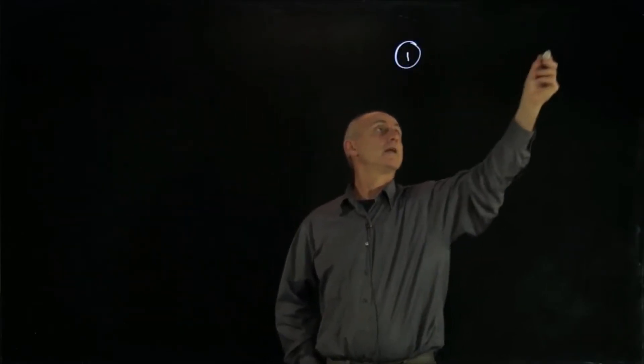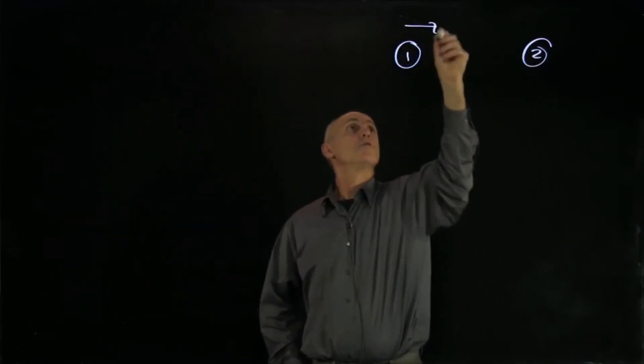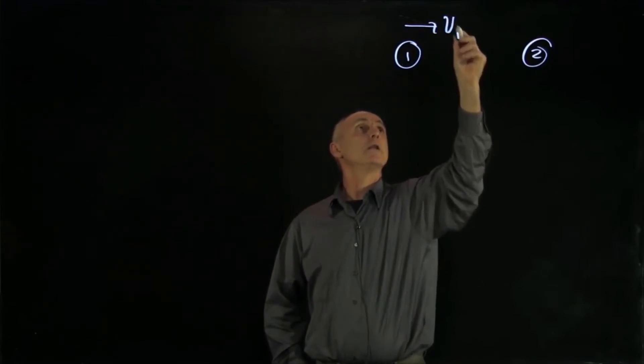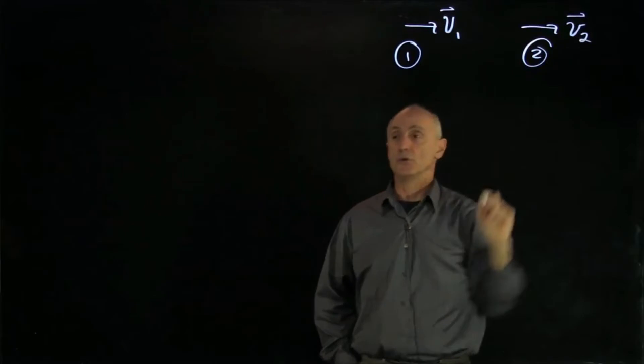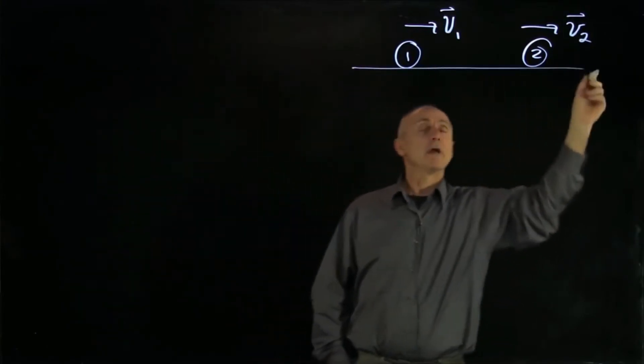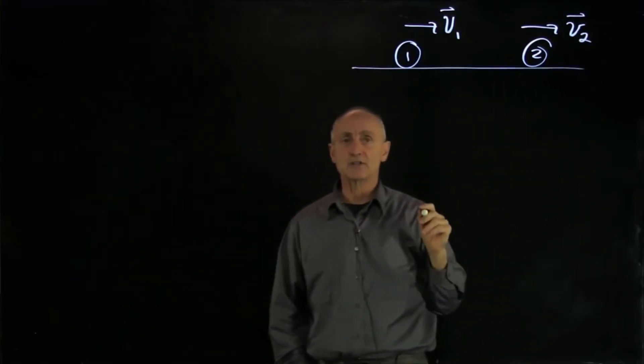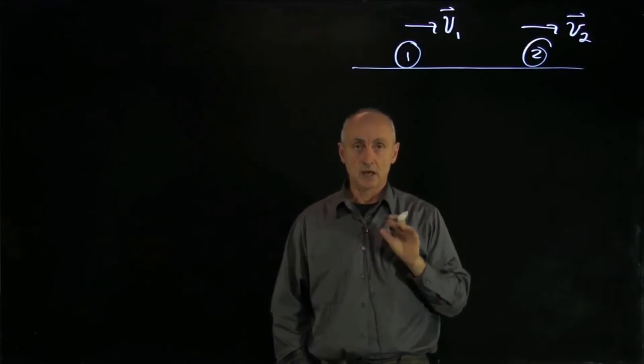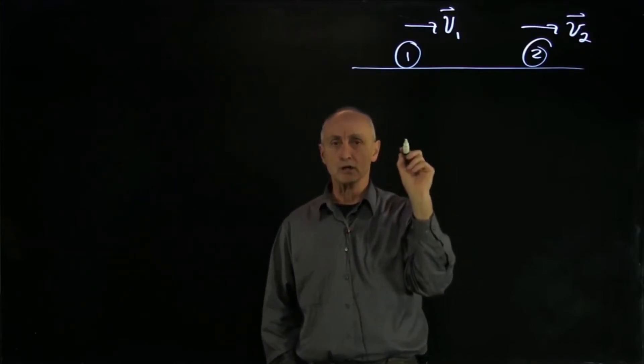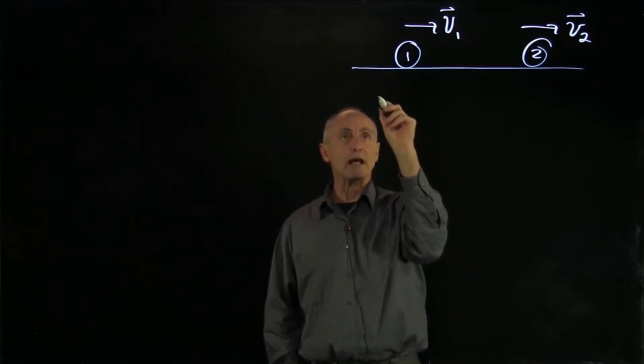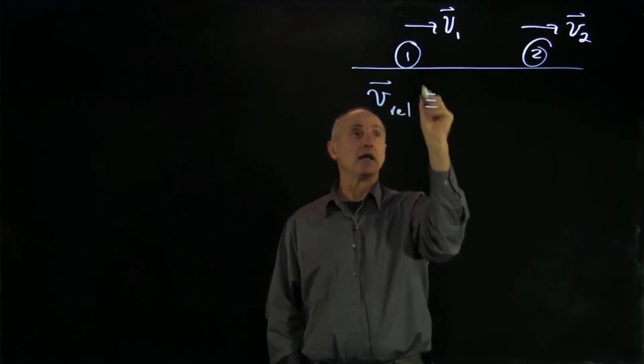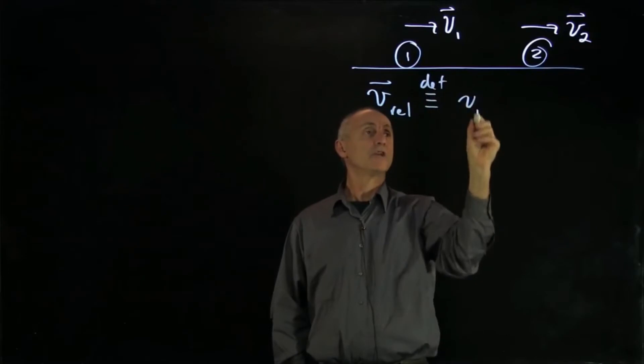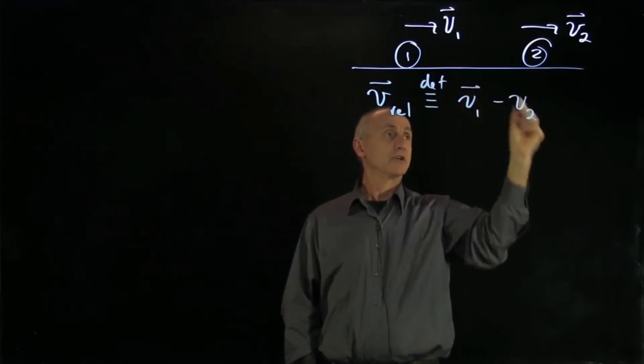For one-dimensional collisions, let's talk about two objects, object one and object two, moving with velocity v1 and velocity v2. Let's say they're moving on the ground. I'd like to introduce the concept of relative velocity, a concept that we experience all the time in our lives. But let's see what it actually means. So v-relative, I'm going to define this to be the velocity of 1 minus the velocity of 2.